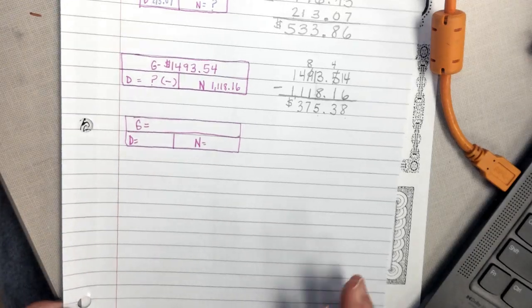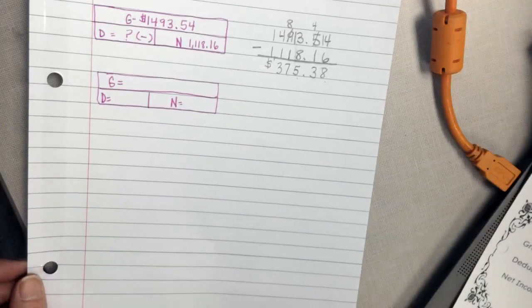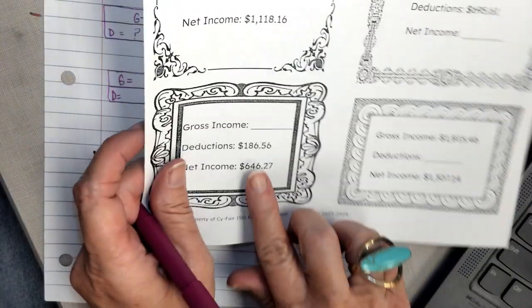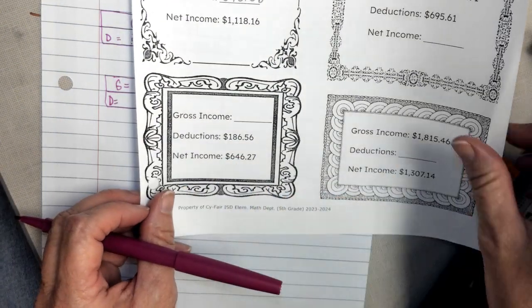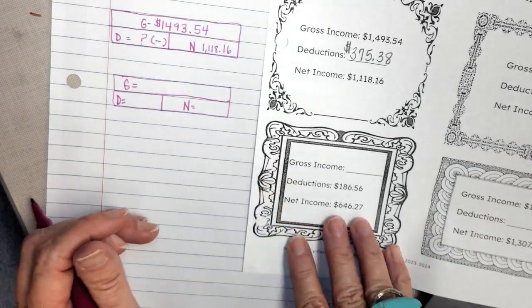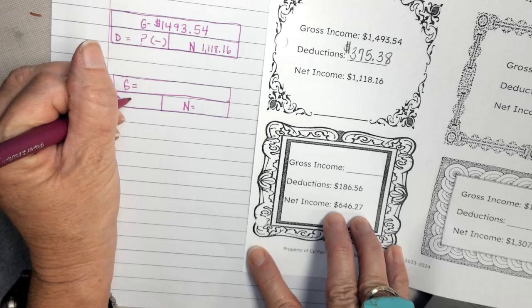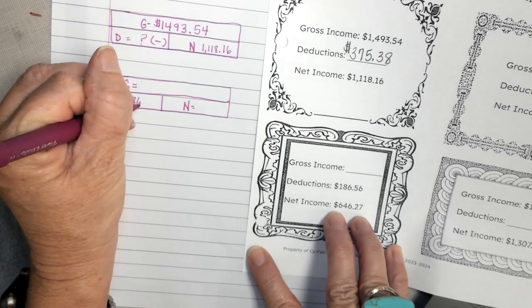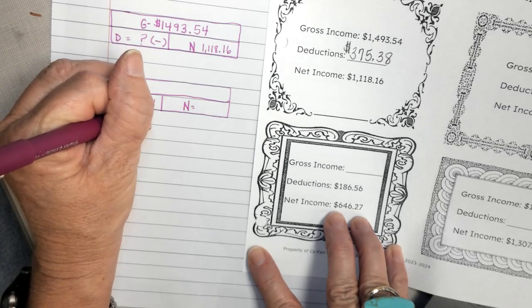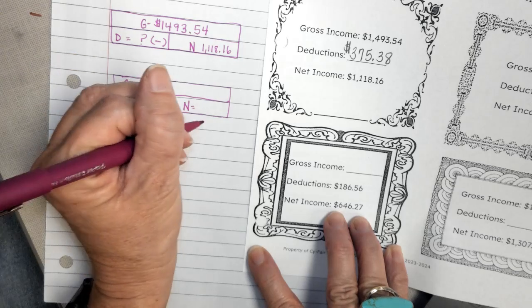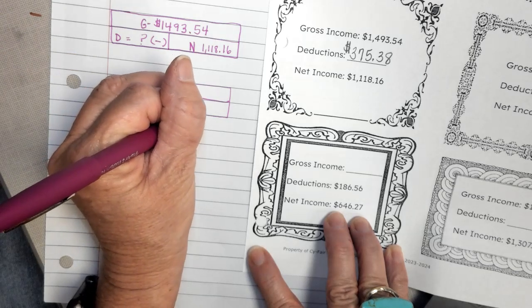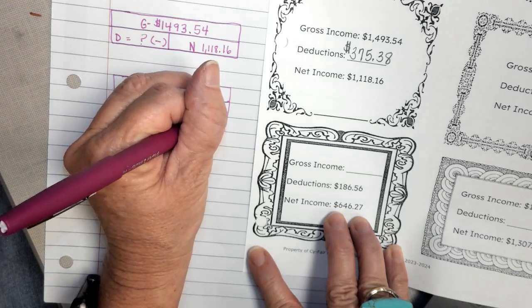So let's see what pieces we have. This time we have our deductions and we have our net. Let's fill that in. We have $186.56. We have a net income of $646.27.